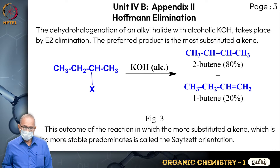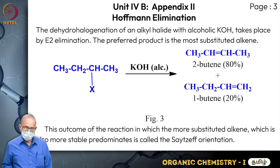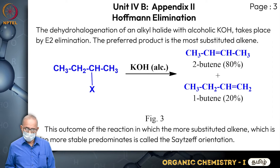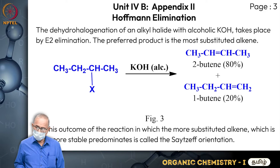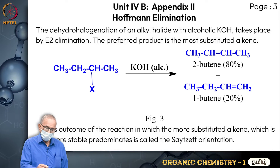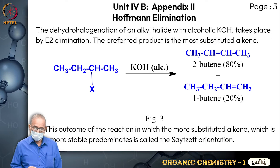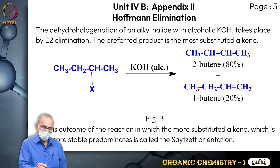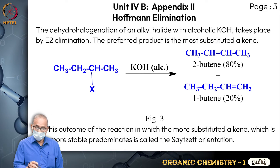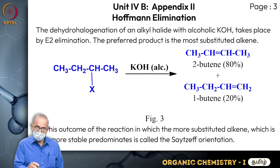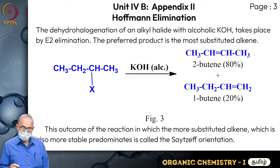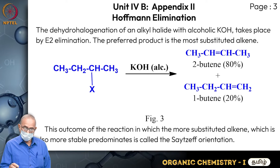Then we look at appendix two, which is Hoffman elimination. If you have dehydrohalogenation of an alkyl halide with alcoholic KOH, usually the molecule splits up HX. This splitting of HX - the removal of HX - can take place from different hydrogens. If the reaction is done by alcoholic potassium hydroxide, you get CH3CH=CHCH3, that is 2-butene, formed to the extent of 80 percent.